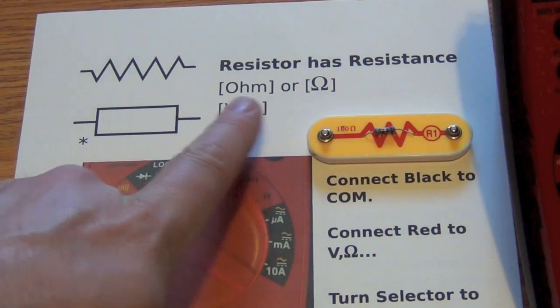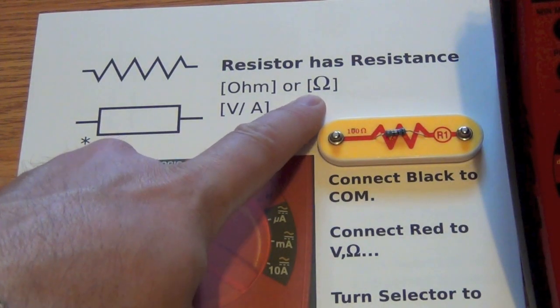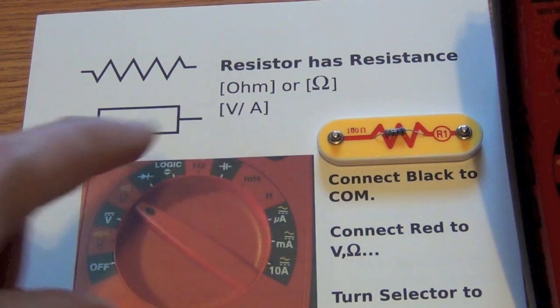Resistance is measured in ohms and gets the symbol omega, a capital Greek letter. It's also known as a volt per amp from Ohm's law.